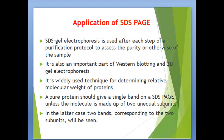Applications of SDS-PAGE: SDS gel electrophoresis is used after each step of a purification protocol to assess the purity of the sample. It is an important part of western blotting and 2D gel electrophoresis. It is widely used for determining the relative molecular weight of proteins. A pure protein should give a single band on an SDS-PAGE gel, unless the molecule is made up of two unequal subunits, in which case two bands corresponding to the two subunits will be seen.